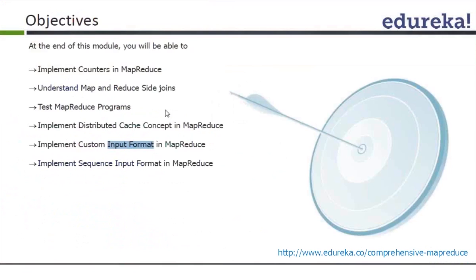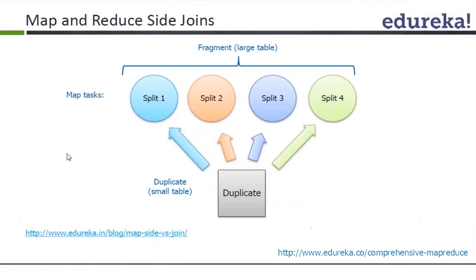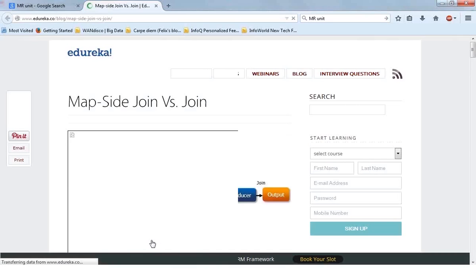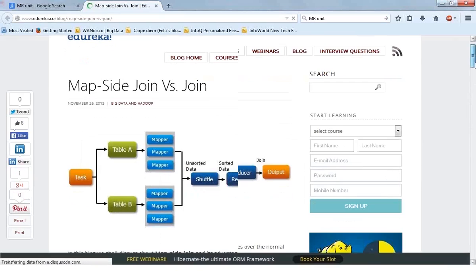Let's get down to the topics for today: map-side join, reduce-side join, data types, input/output formats, unit testing, counters, cache, and sequence files. There is also a very good article on the Edureka blog about MapReduce joins — it covers the normal join in Hive versus the MapReduce join, which will be very helpful for you to read through.